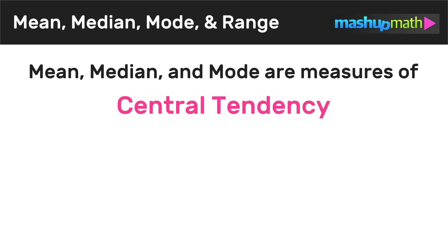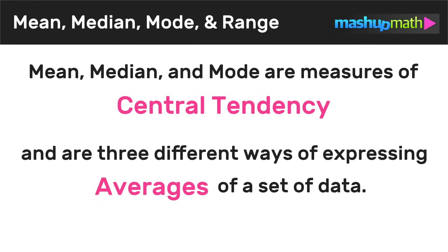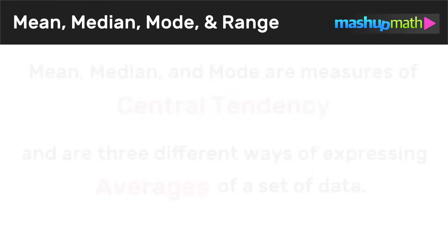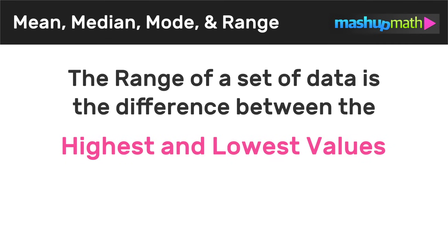Now before we look at any examples, let's incorporate some key vocabulary terms. We'll start out by saying that mean, median, and mode are measures of central tendency. That just means that mean, median, and mode are three different ways of expressing the averages of a set of data. And finally, the range of a set of data is the difference between the highest and lowest values.